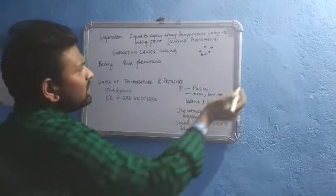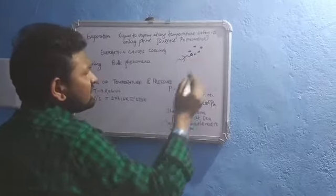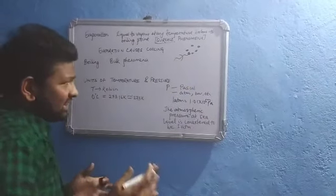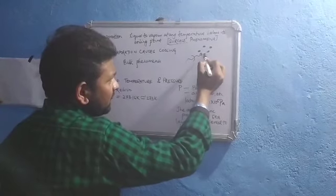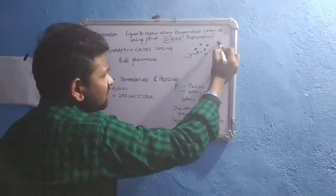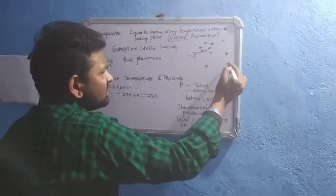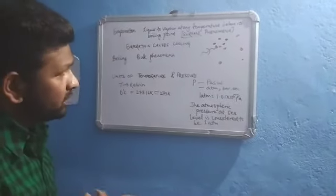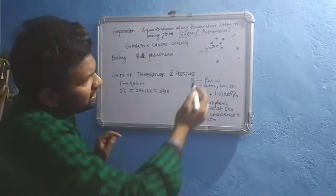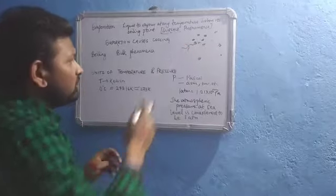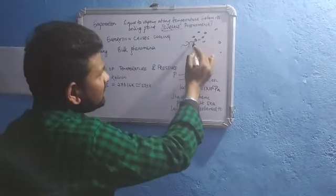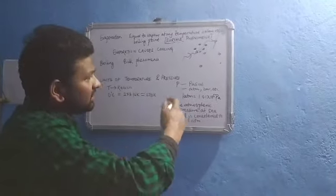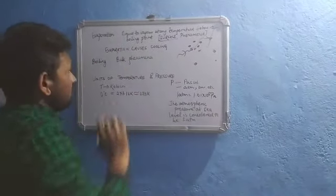If the liquid is exposed to sunlight, the particles on the surface get excited. As they get excited, the inter-particle separation increases. As a result, these surface particles gain kinetic energy. The intermolecular forces of attraction are broken, and these particles start to vaporize. The liquid is getting converted into vapor state, and that process is called evaporation.